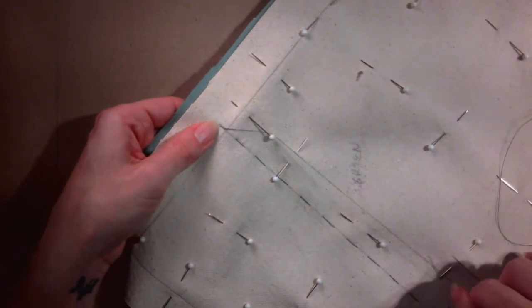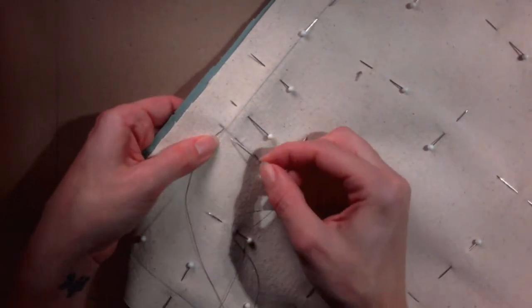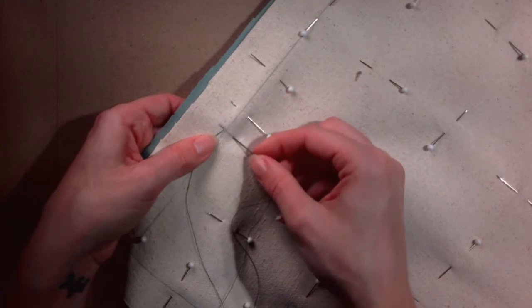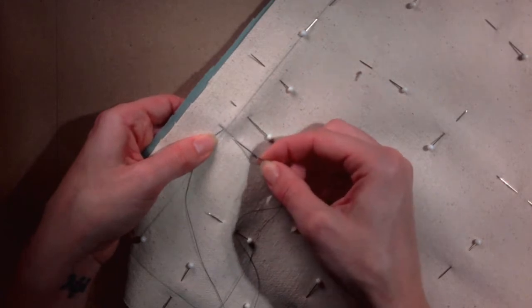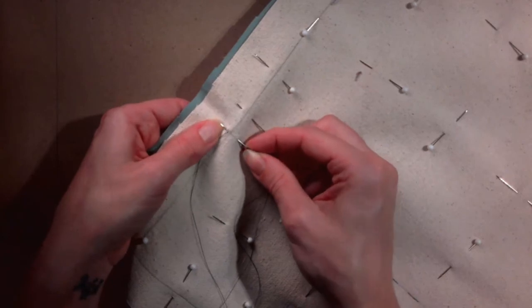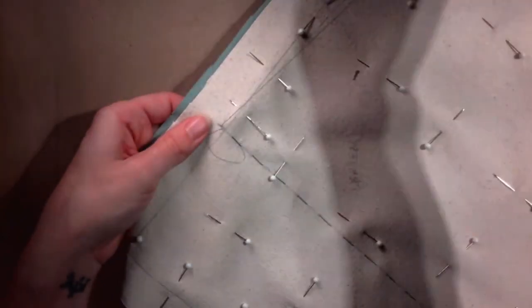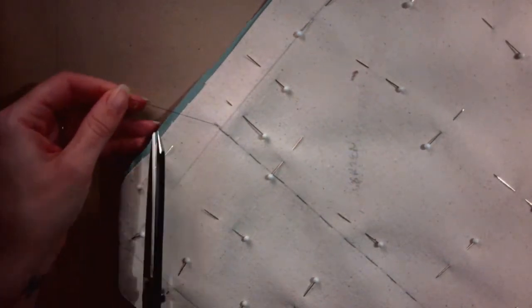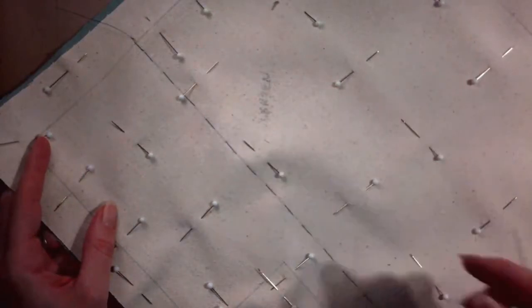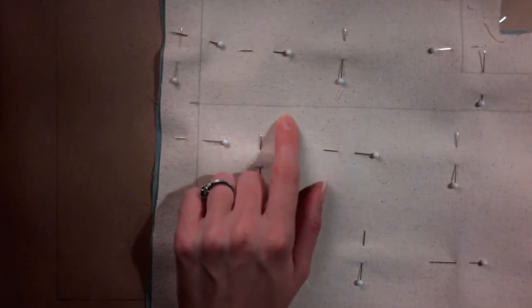When you reach the end, create a tailor's tack by going down just in front of where you went down last and back up just behind where you came back up last. Pull until the thread is taut and cut the thread leaving about a 3 inch tail. Repeat this on the other strap placement line.